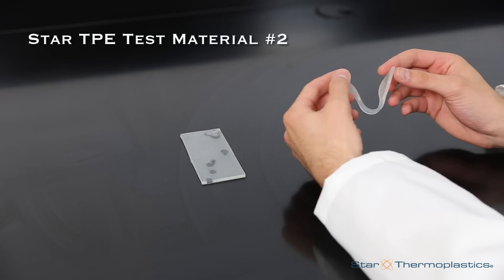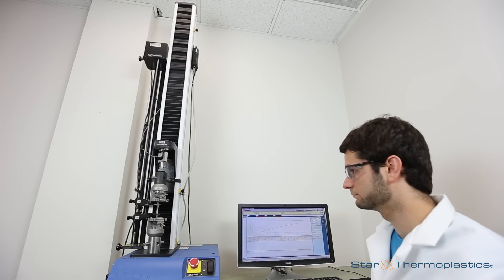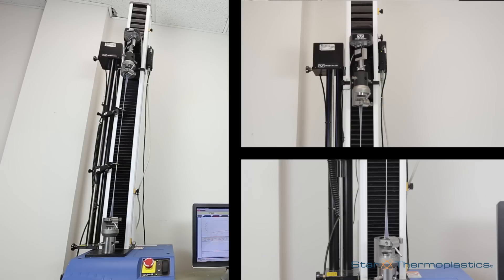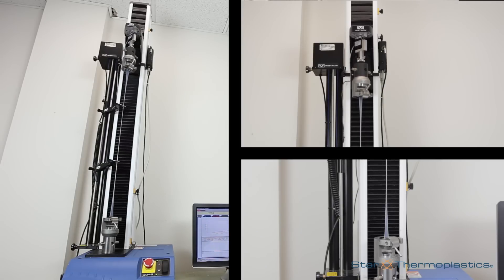And here's a soft gel-like TPE, used for applications such as bicycle seats, shoe insoles, or other soft skin contact parts. Because these applications don't typically involve the need for continuous stretching, their tensile strength can be much lower.